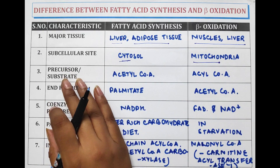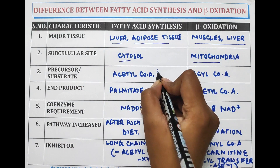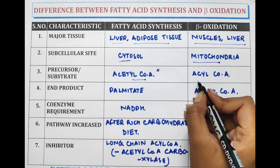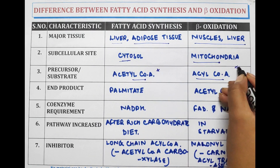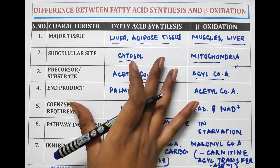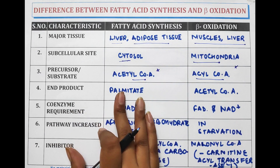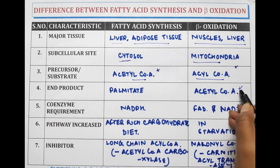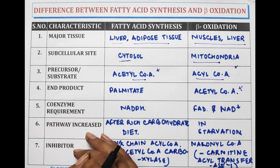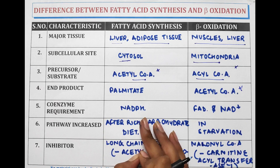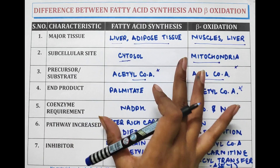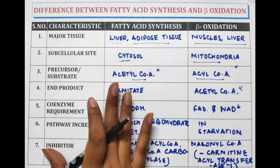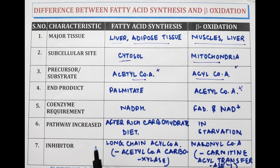The precursor or substrate for fatty acid synthesis is acetyl coenzyme A, and for beta oxidation it is acyl coenzyme A. The end product for fatty acid synthesis is palmitate, whereas for beta oxidation it is acetyl coenzyme A. Coenzyme requirements for fatty acid synthesis is NADPH, and for beta oxidation it is FAD and NAD+.